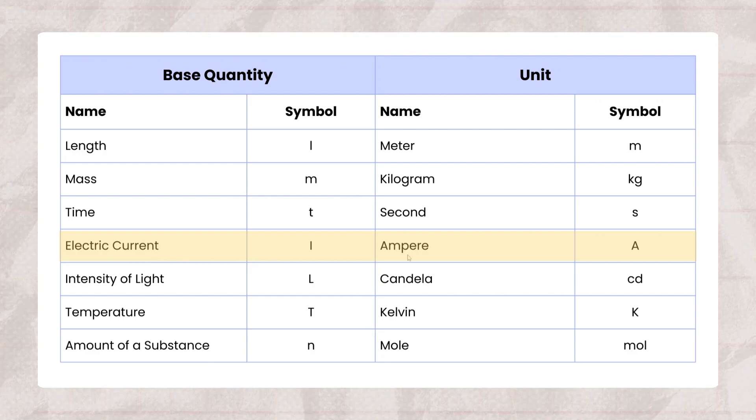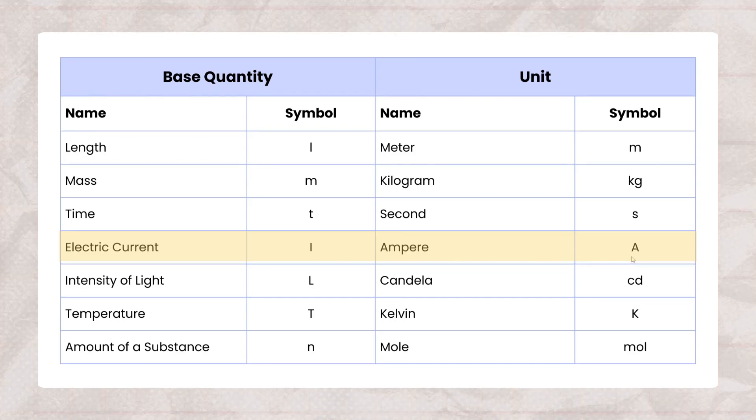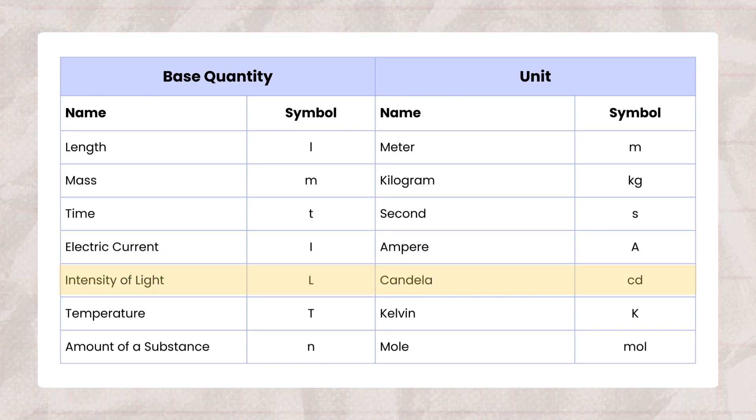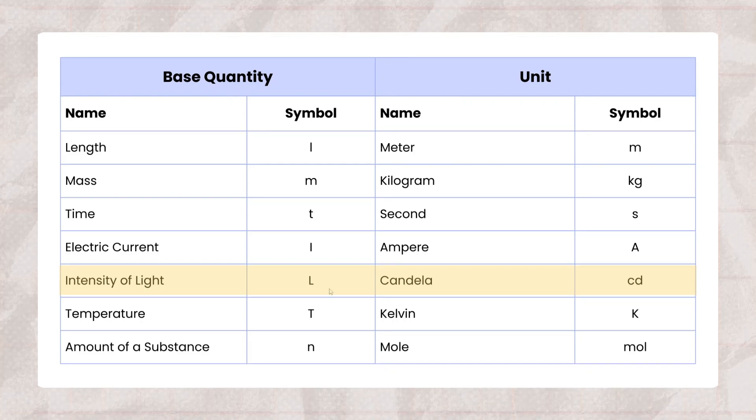Its symbol is I. Its unit is ampere and it is denoted by capital A. Number 5 is intensity of light. Its symbol is capital I.